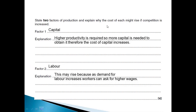Another question asks to name two factors of production and explain why the cost of each might rise if competition is increased. For capital: because high productivity is required, more capital is needed to obtain it, therefore the cost of capital increases. For labour: costs may rise because as demand for labour increases, workers can ask for higher wages.